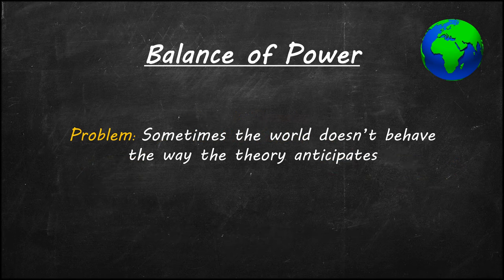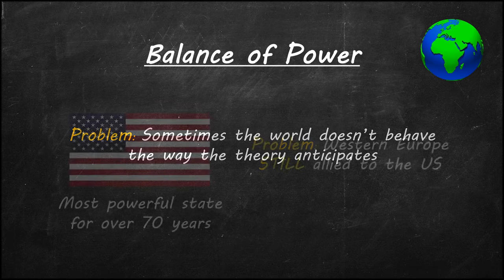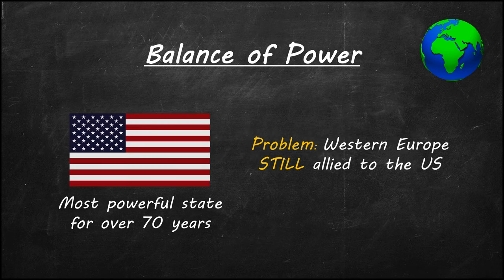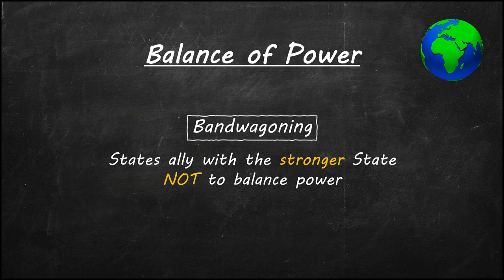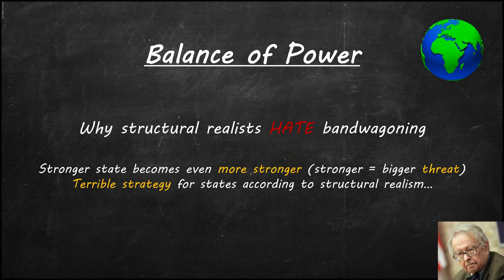But there is a problem. The problem with structural realism and balance of power theory is that sometimes the world doesn't behave in the way that the theory anticipates. For example, why is Western Europe allied with the United States when the United States has been the most powerful and most capable state in the world for the past 70 years? Even during the Cold War, the United States was the more powerful state than the Soviet Union in almost every measure. If states truly balance against power, then shouldn't Western Europe be allied with the Russians against the United States? When weaker states ally with the stronger state, it's called bandwagoning. Structural realists generally argue against bandwagoning, claiming it is less likely to happen than balancing because the stronger state becomes even stronger.